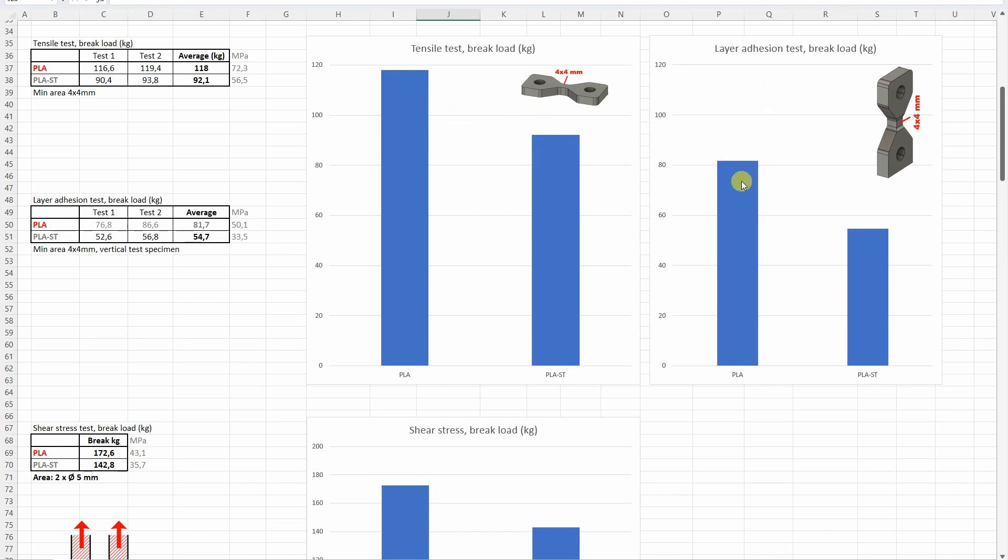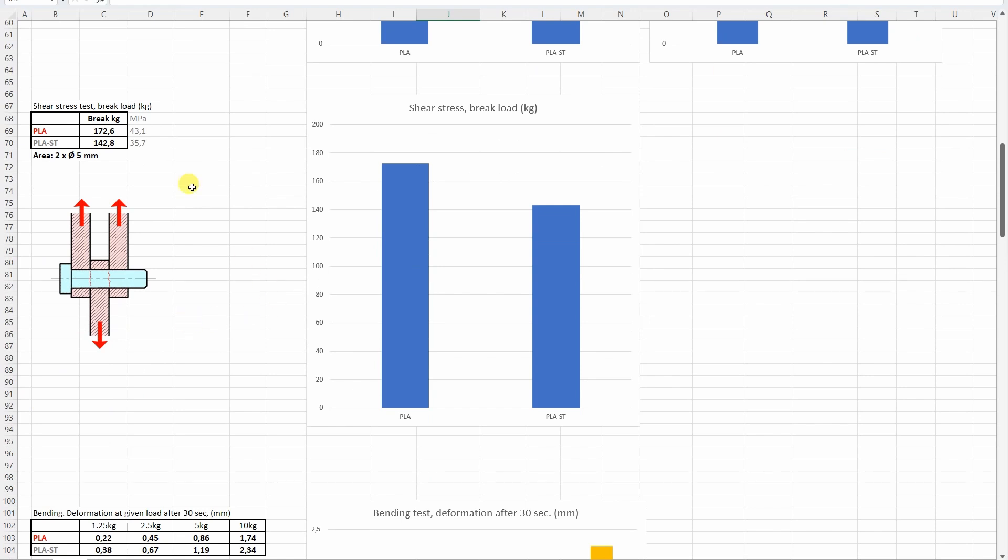But this was very impressive. I don't think I had over 80 kilogram break load on the layer adhesion test. I have to check maybe the flow rate or something, but this is very impressive because this is also a great value. Everything above 20-30 kilograms is fine in this test. The shear stress, these are average good results for PLA. Of course the regular PLA was again better in this test.